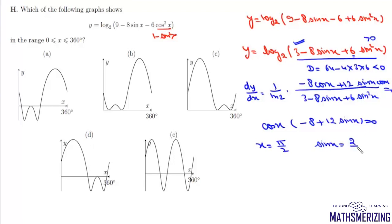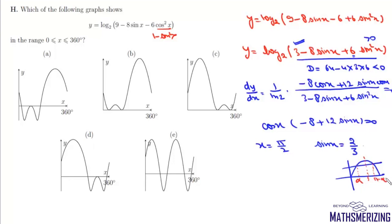From cosx = 0, we get x = π/2. From -8 + 12sinx = 0, we get sinx = 2/3. Looking at the graph of sin, this value occurs at two points: one less than π/2, call it α, and the other at π - α. So we have three critical points: α, π/2, and π - α.